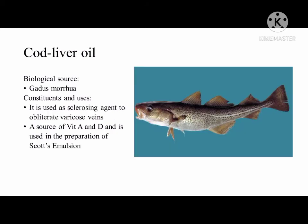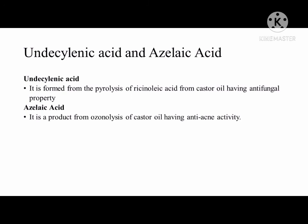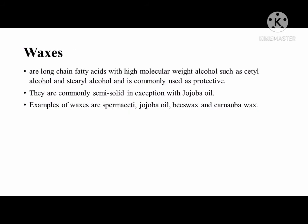Another is cod liver oil with biological source Gadus morhua. It is used as a sclerosing agent to obliterate varicose veins, and is also a source of vitamins A and D used in the preparation of Scott's emulsion. Other examples are undecylenic acid and azelaic acid. Undecylenic acid is formed from the pyrolysis of ricinoleic acid from castor oil and has antifungal properties, while azelaic acid is a product of ozonolysis of castor oil and has anti-acne activity.